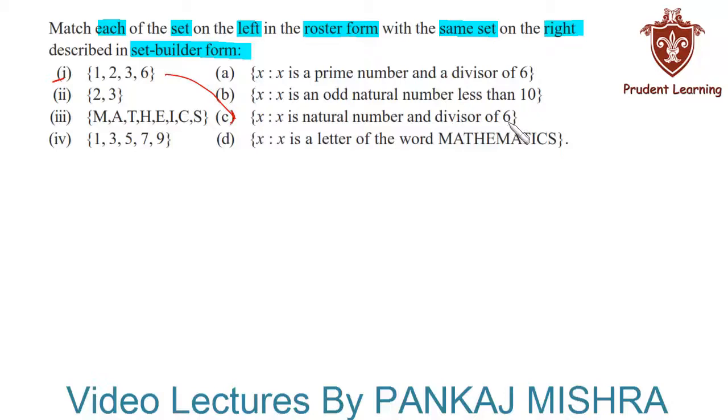a natural number and divisor of 6. The second set given to us consists of elements 2 and 3. We know that 2 and 3 both are prime and also they are divisors of 6, so this will match with